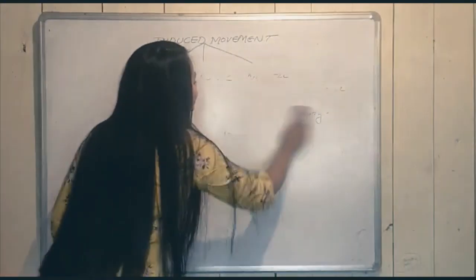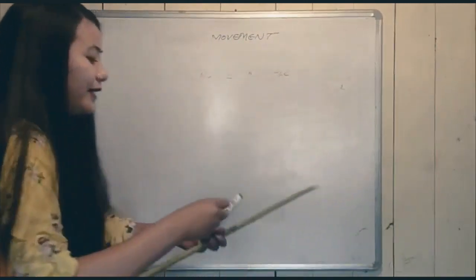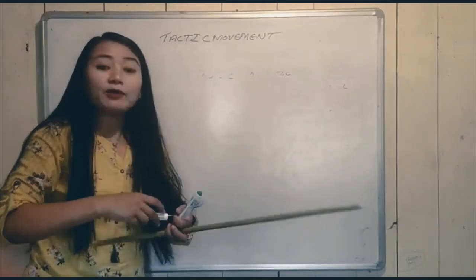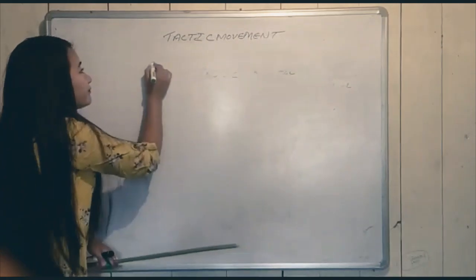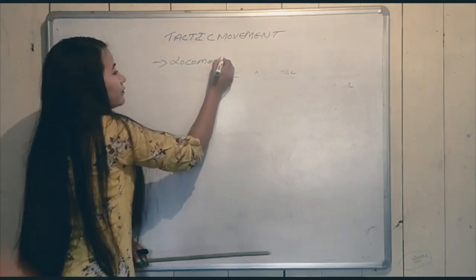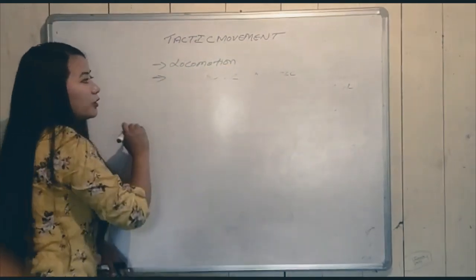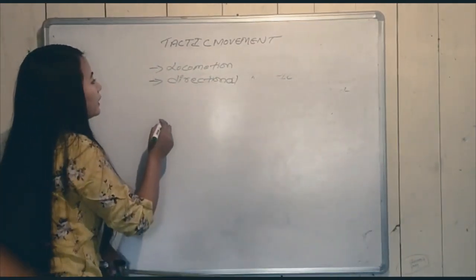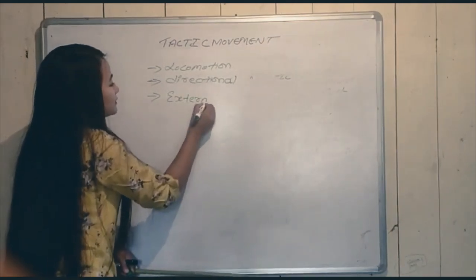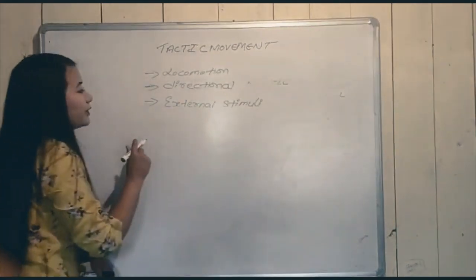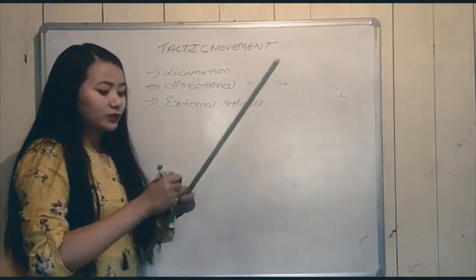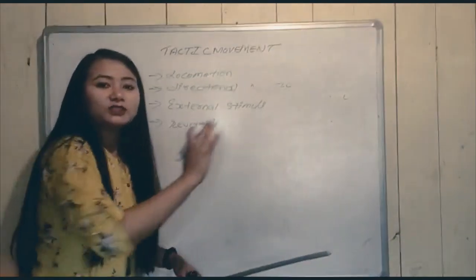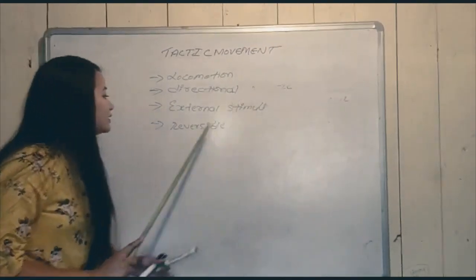Now let's go into the details of tactic movement. Key points to remember: number one, it is a movement of locomotion — the whole organism changes its position. Number two, it is directional — the movement is toward or away from the direction of the external stimuli. Number three, it is due to external stimuli. Number four, this movement is reversible.